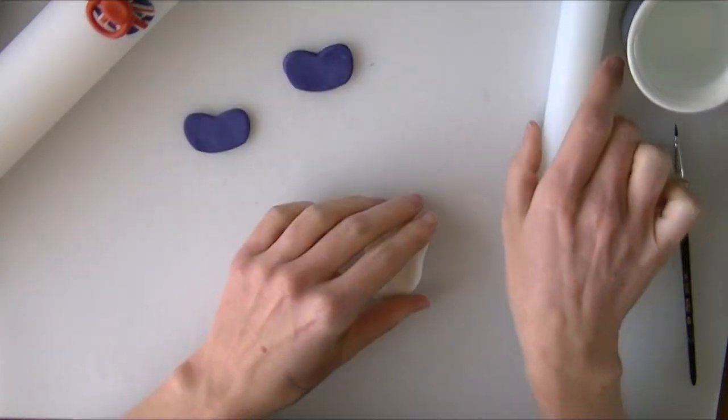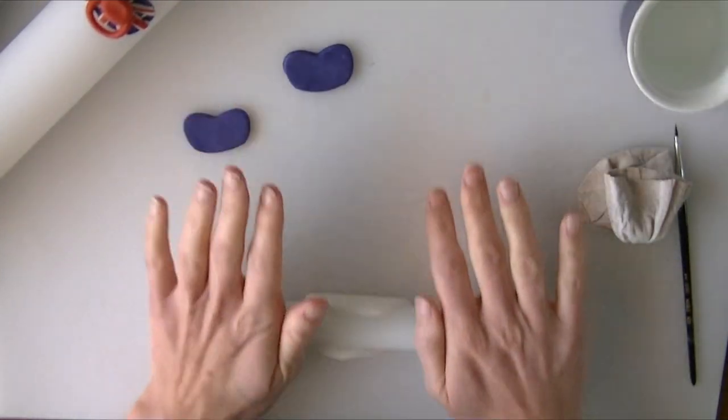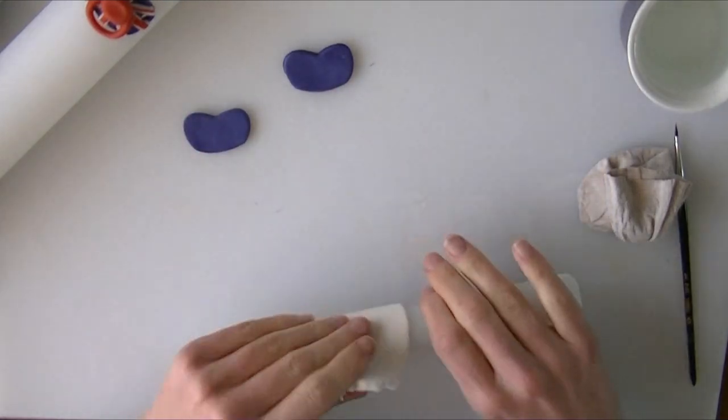We're going to need some white now. We're just going to roll it nice and thin, much thinner than what we've done for the blue bits.